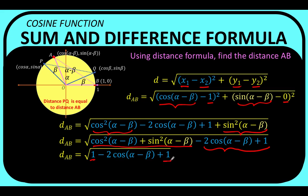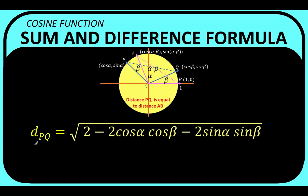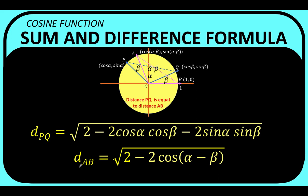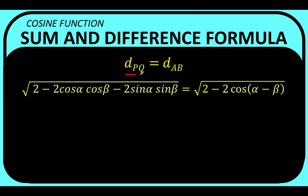Combining the constants 1 and 1, we arrive at distance AB equals the square root of 2 minus 2 cosine(alpha minus beta). We now have an expression for distance PQ and an expression for distance AB. Since geometrically PQ equals AB, we can equate the two expressions: the square root of 2 minus 2 cosine alpha cosine beta minus 2 sine alpha sine beta equals the square root of 2 minus 2 cosine(alpha minus beta).